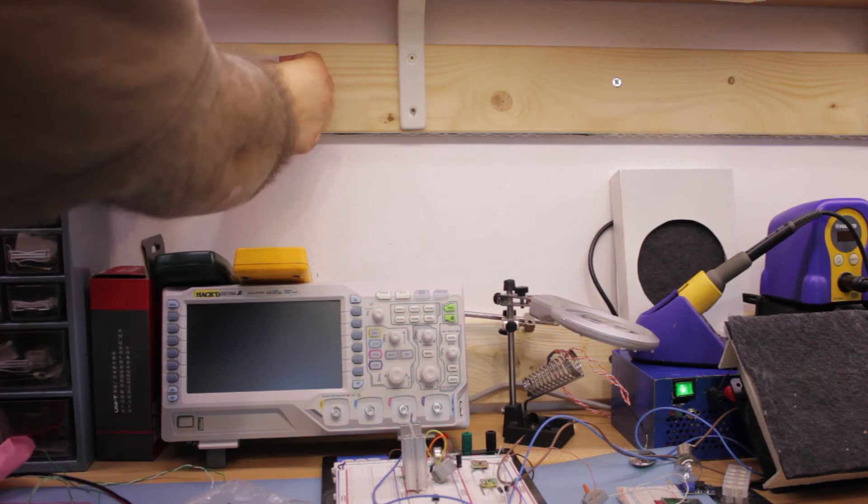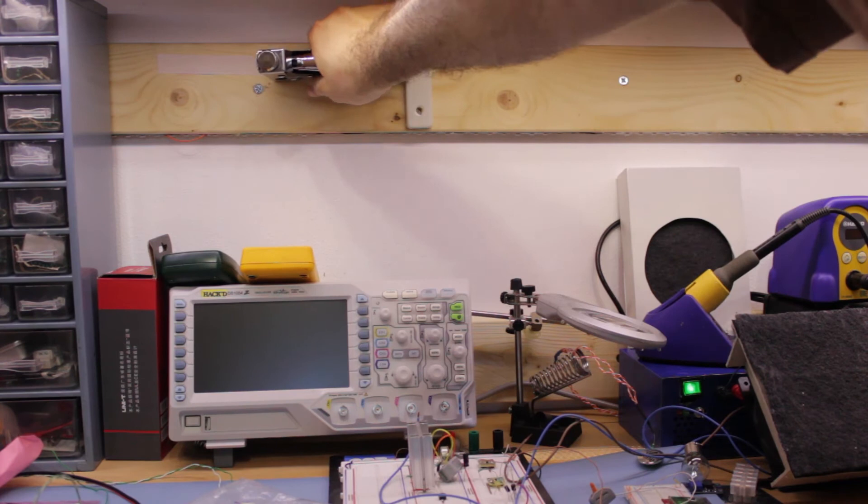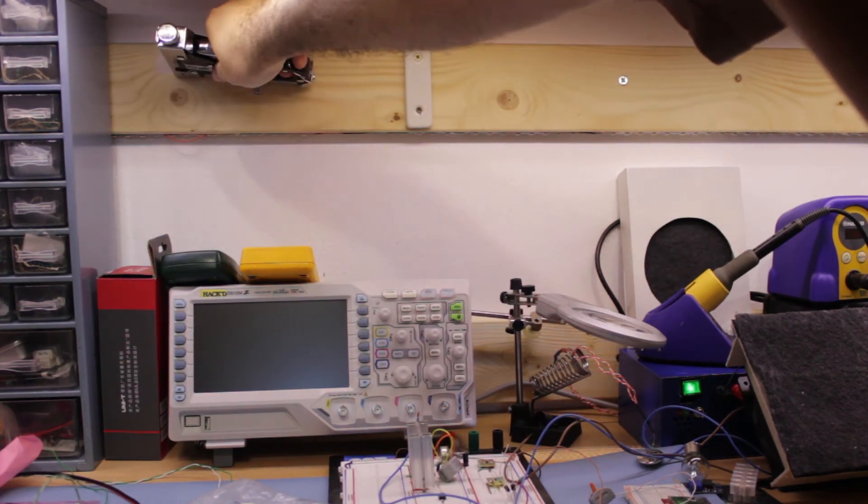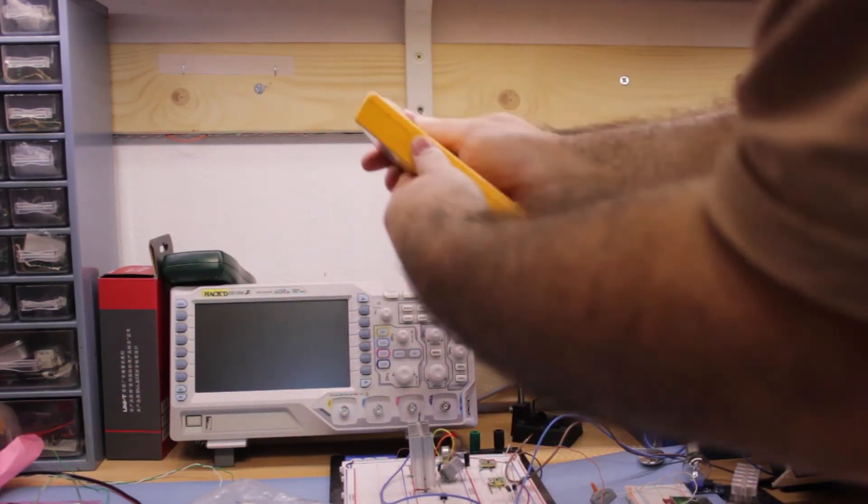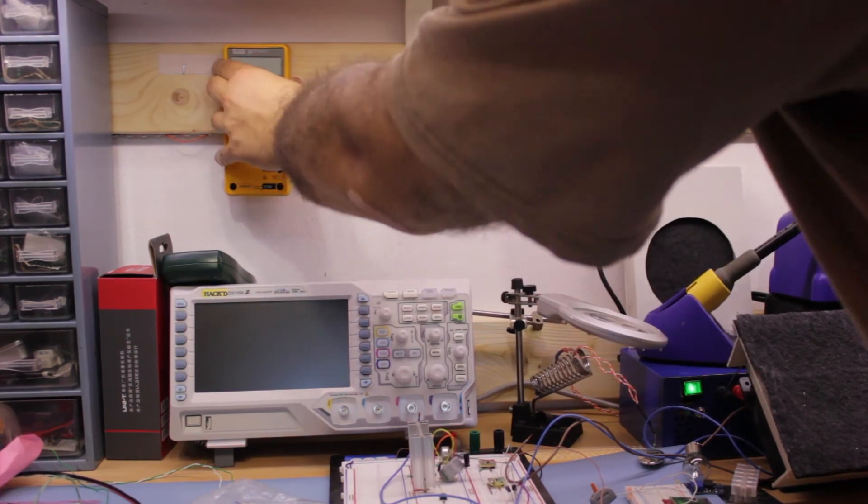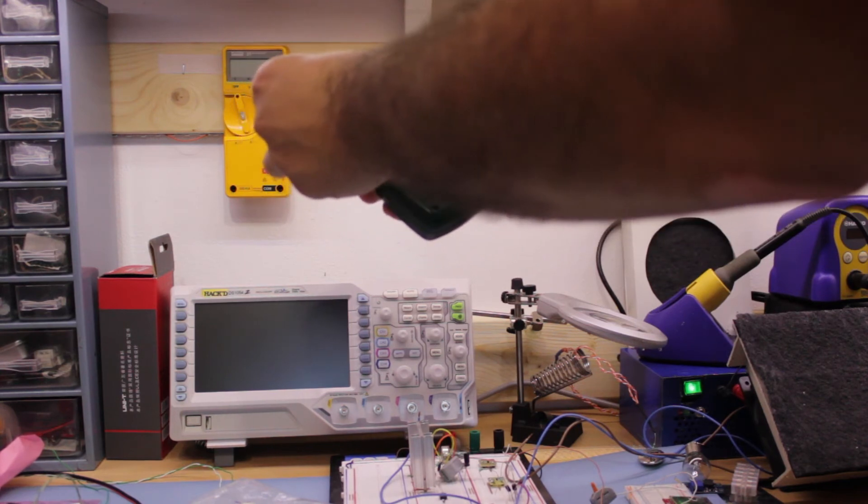Just above my oscilloscope, I stuck and stapled a length of hook and loop fastener, i.e. Velcro. To each one of my multimeters, I stuck the other half of the Velcro strip. The multimeters were then positioned in place above my oscilloscope.